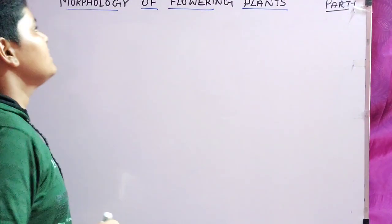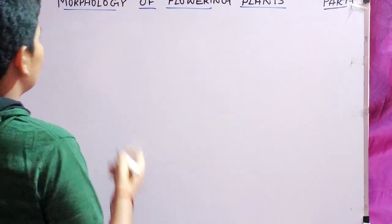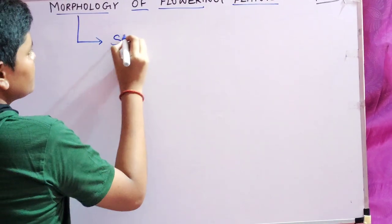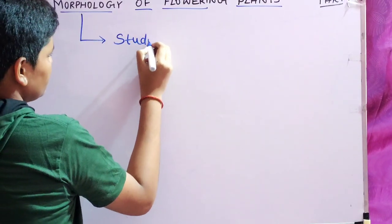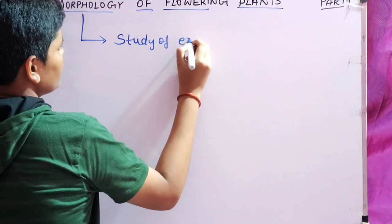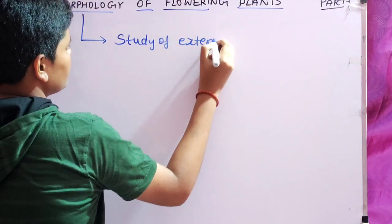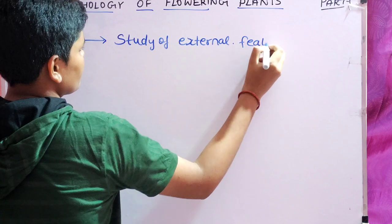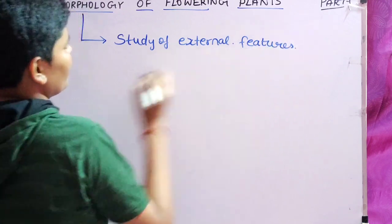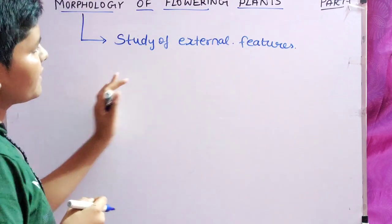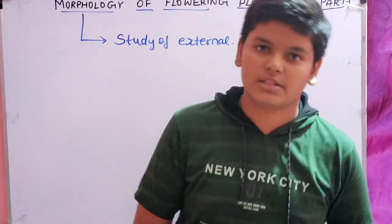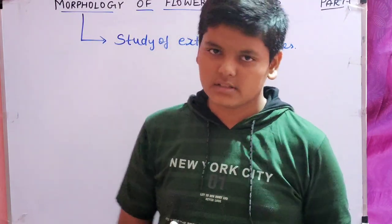Morphology of the flowering plant. What is the meaning of morphology? Study of external features is called morphology. And what is anatomy? Study of internal structures. So morphology is the study of external structures.